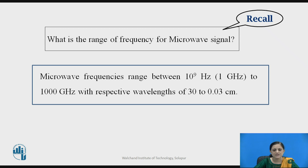You know that frequency and wavelength are inversely proportional to each other. So when high frequency is considered, you get a very low value of wavelength in terms of micrometer. Therefore, these types of waves are called microwaves.